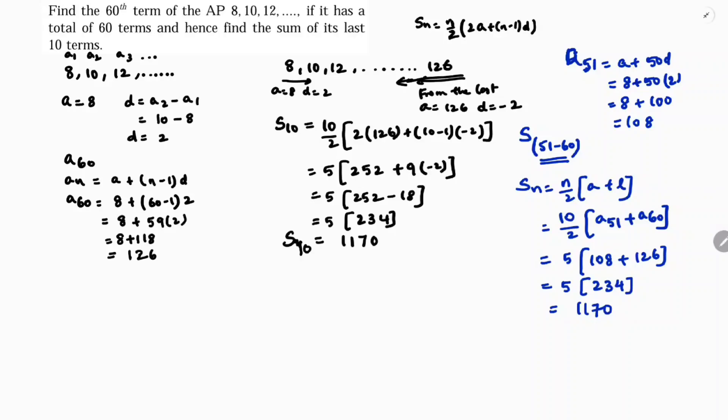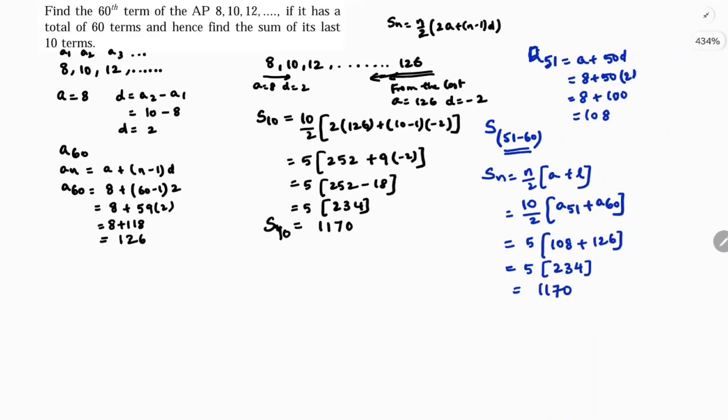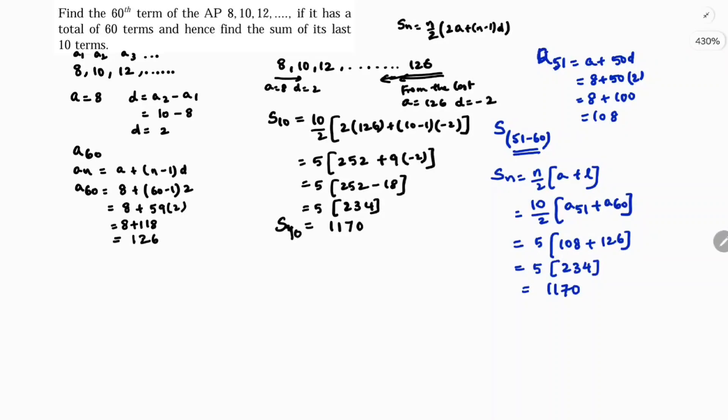You can do in one more method. That is sum of 60 terms. You need to find sum of 60 terms, last 10 terms. Sum of last 10 terms is S60 minus S50. If you take out the 50 terms you will be left with the last 10.